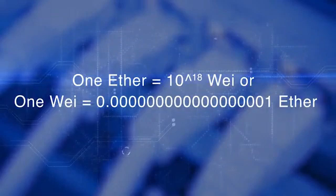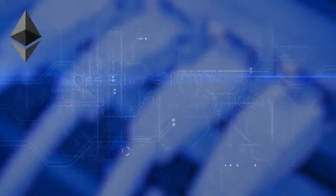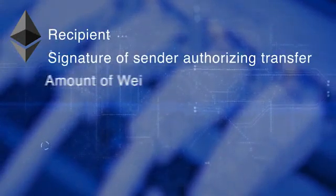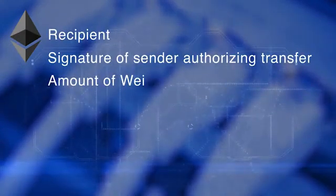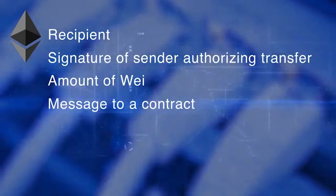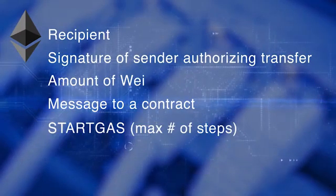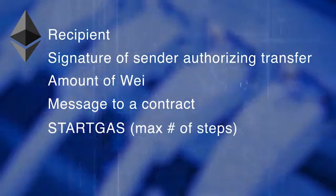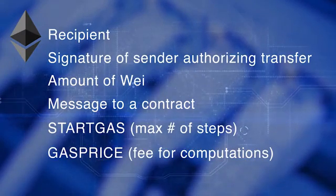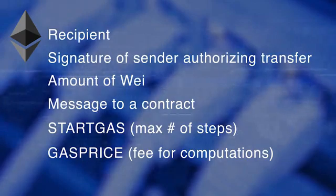A transaction in Ethereum includes: the recipient of the message, the digital signature of the sender authorizing the transfer, the amount of Wei to transfer, an optional data field or payload containing a message to a contract, a start gas value representing the maximum number of computational steps the transaction is allowed, and a gas price representing the fee the sender is willing to pay for the computations.